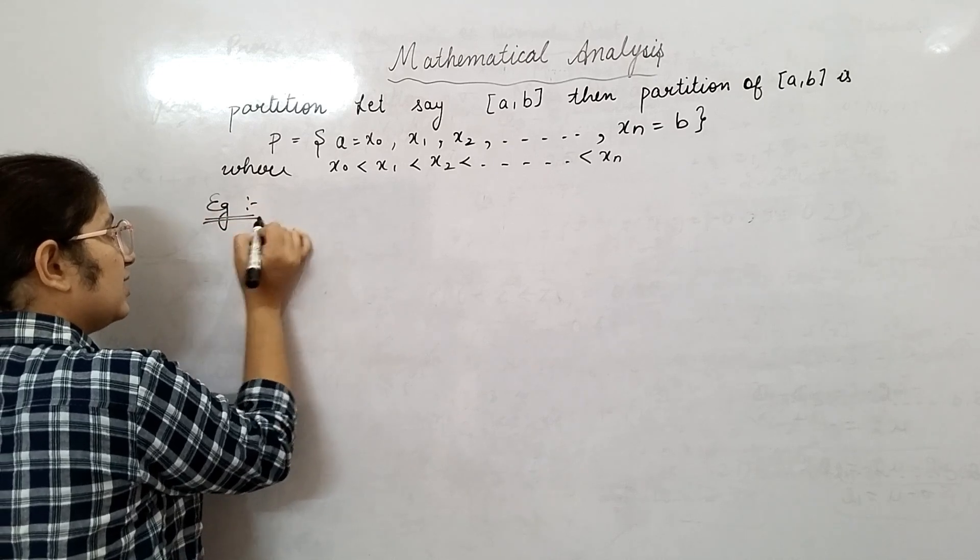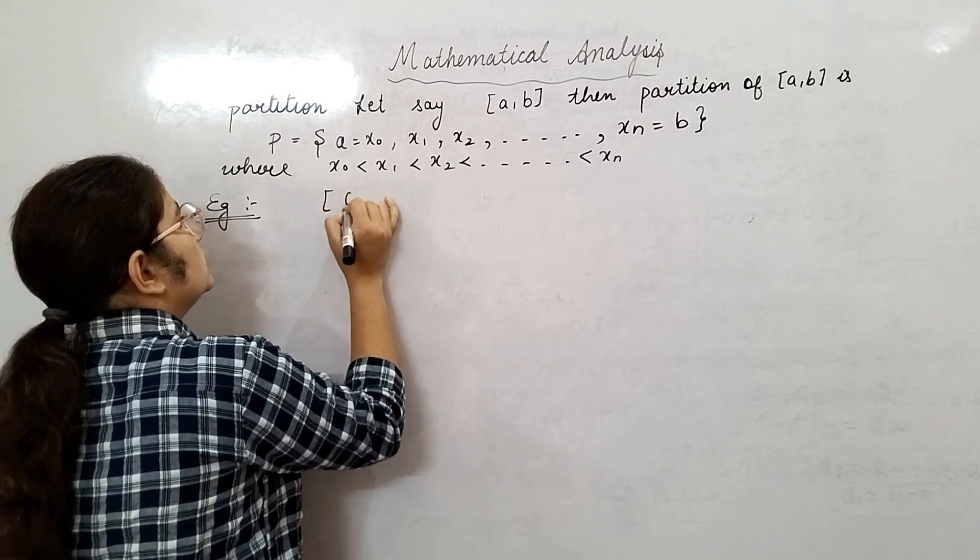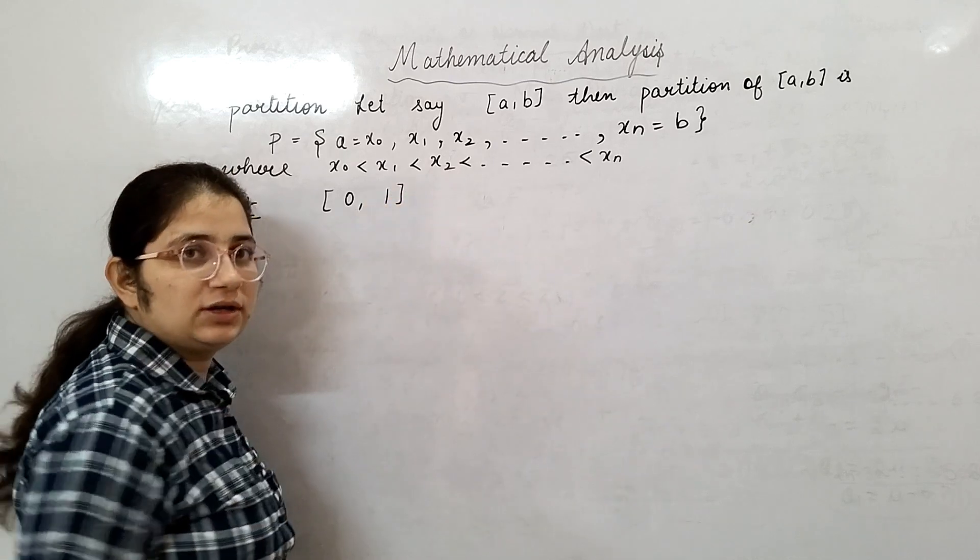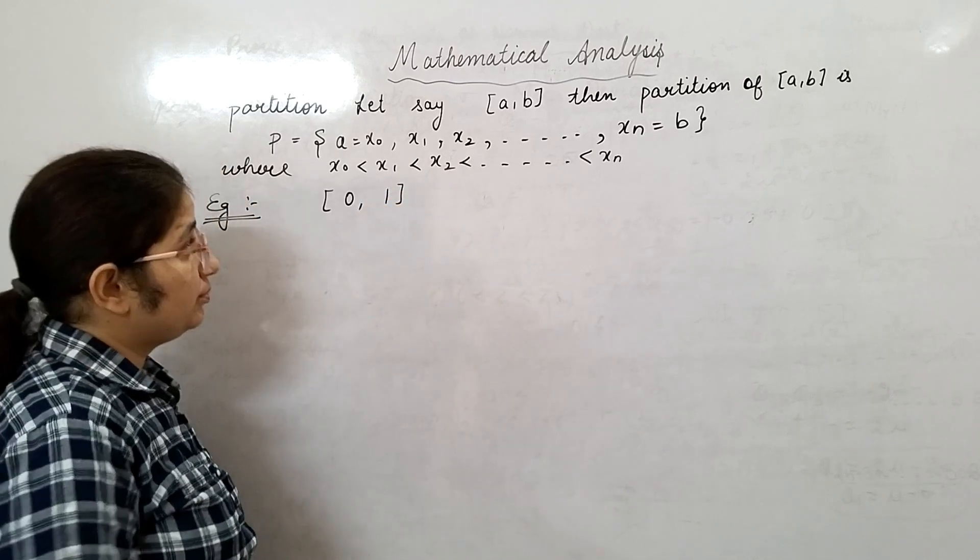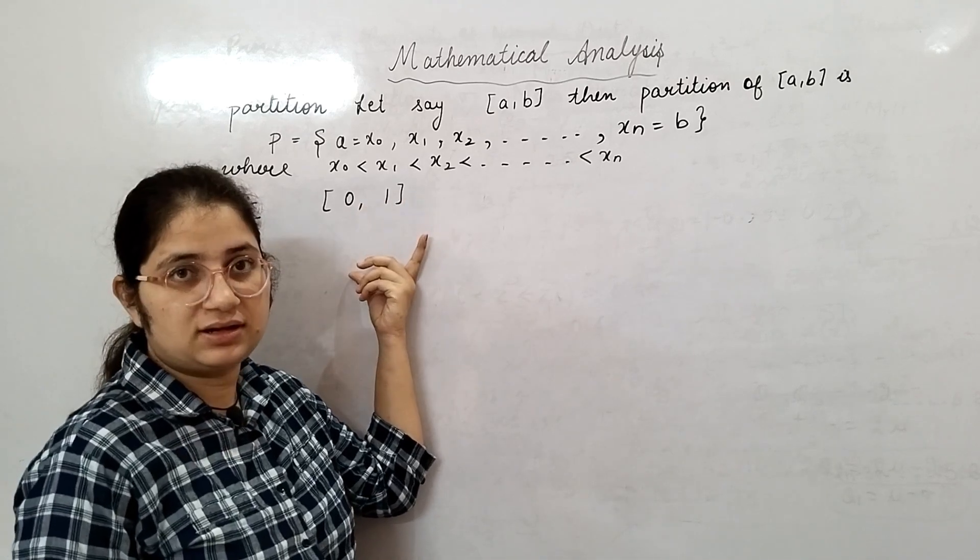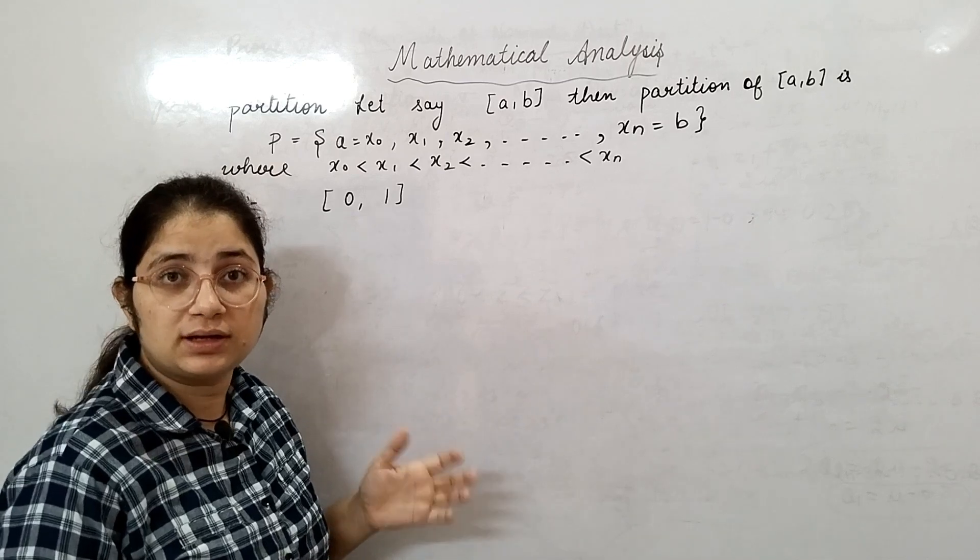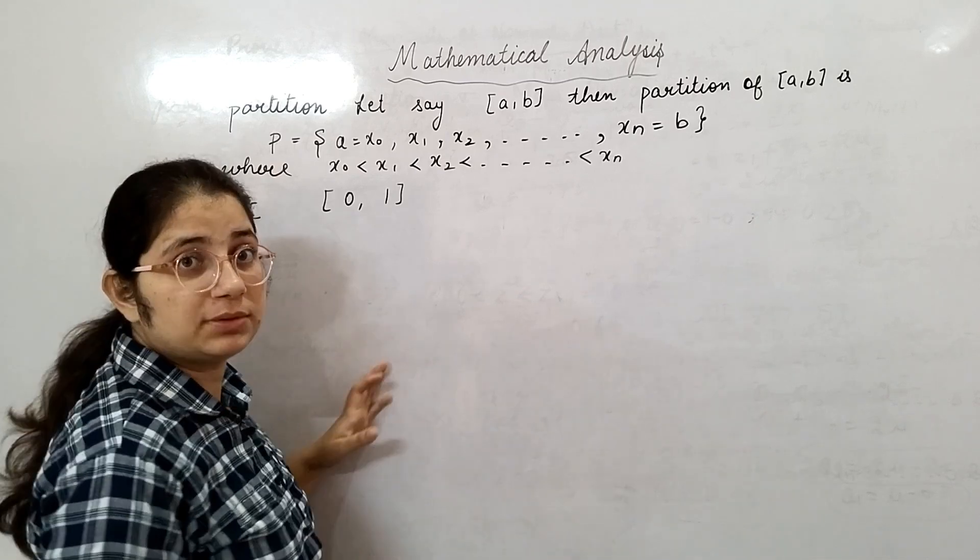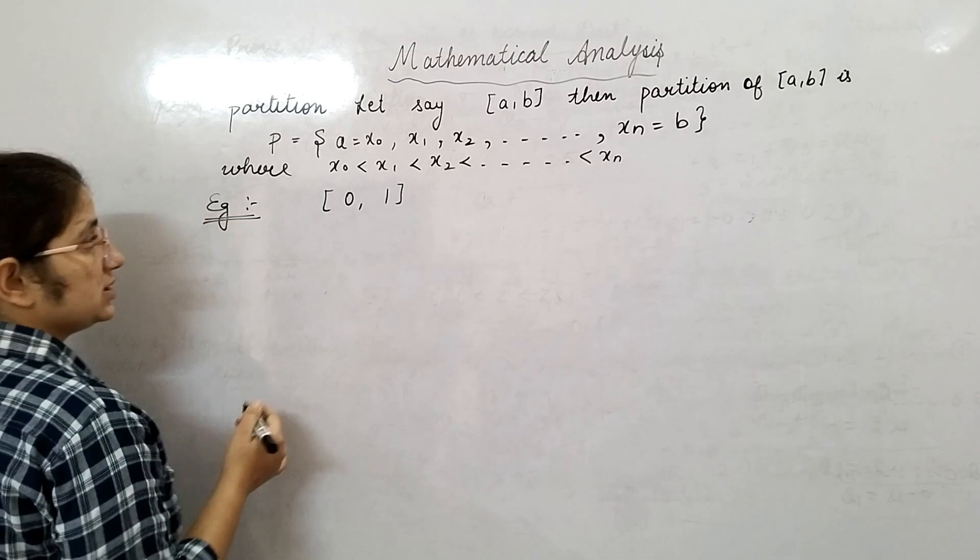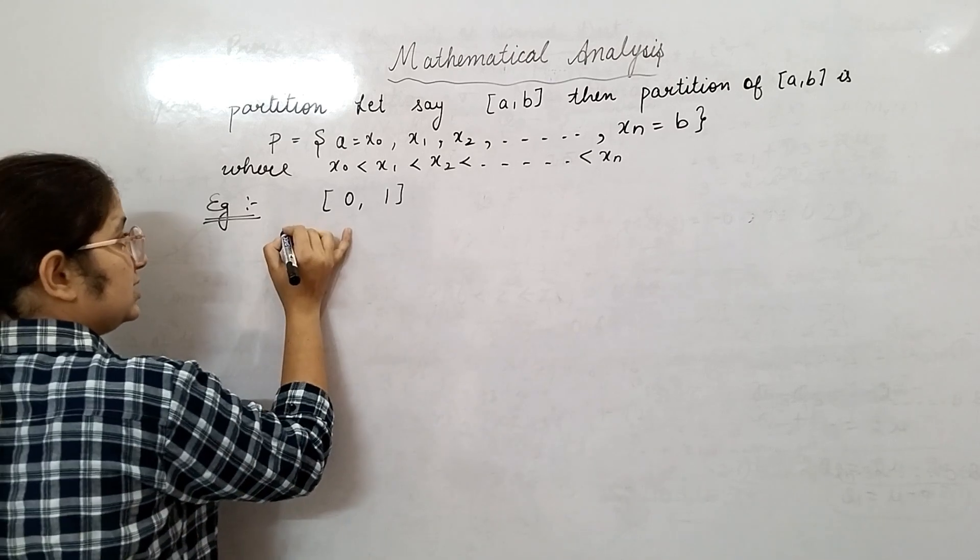In the example, I have taken the closed interval [0, 1]. Now there are infinite numbers in this interval - uncountable infinite numbers. So you can make infinite partitions for this, and all the partitions will be different. See how?